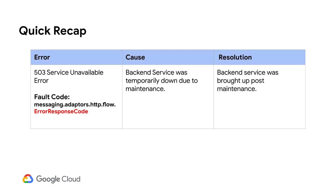Let me do a quick recap. We used the API monitoring dashboard and UI Trace and determined the cause of the 503 errors to be the back-end service. The UI Trace further helped us find out that the back-end service was actually down for maintenance. Finally, we resolved the issue by bringing the back-end service online from maintenance mode.